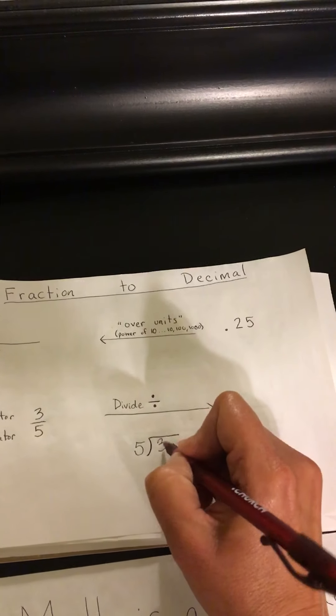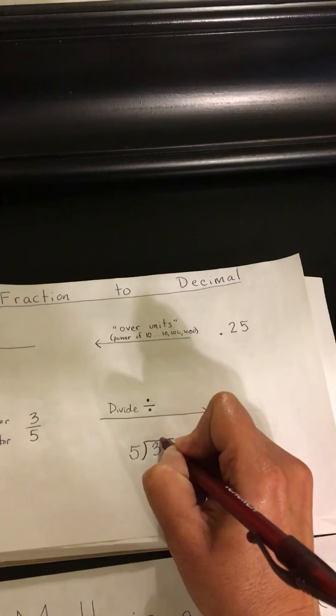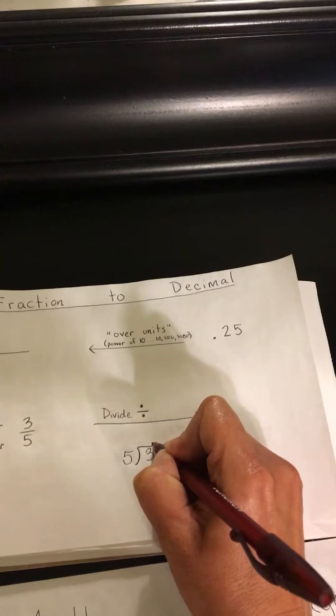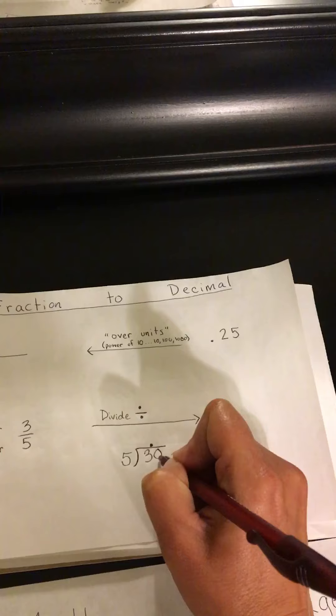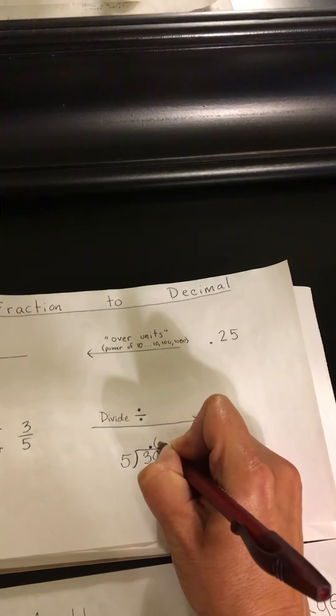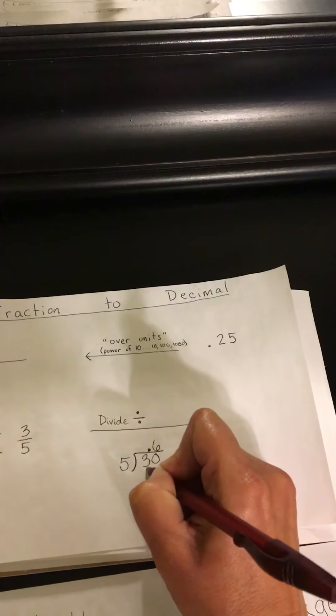So does 5 go into 3? No, it doesn't. So I'm going to put my decimal here. I'm going to add a 0. Does 5 go into 30? Yes, it does. It goes in 6 times. So 6 times 5 is 30.